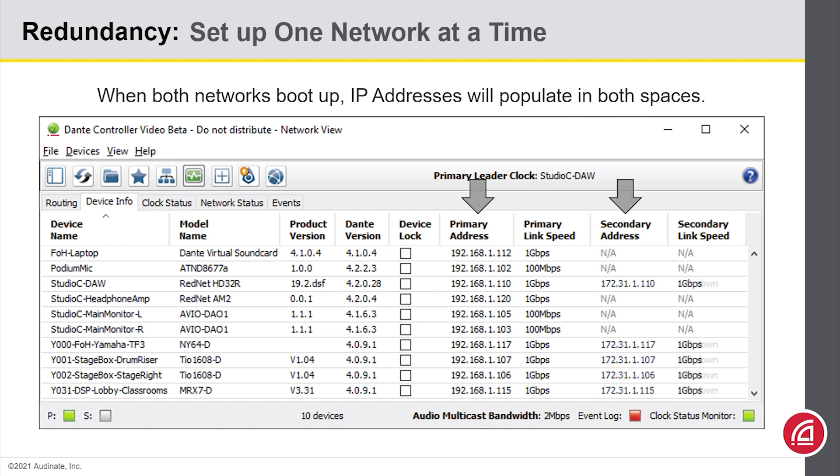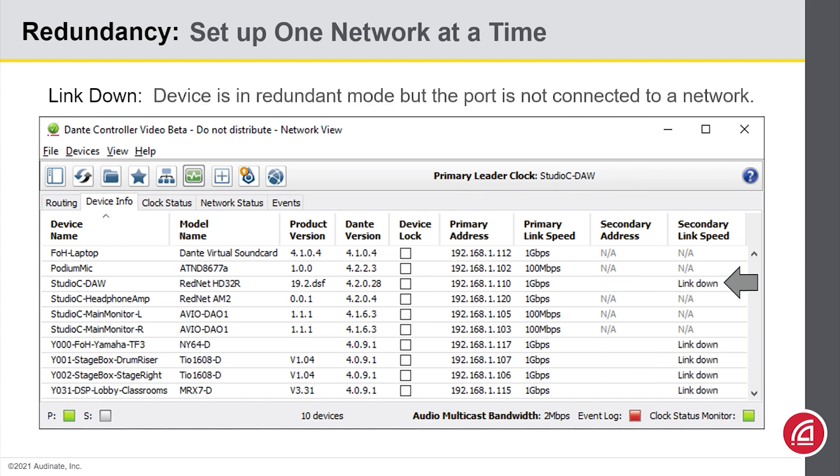But if I disconnect the cables to my secondary network or just simply turn off my secondary switches, we can see those devices will now show link down. When you see that, you know the device is properly set for redundant networks. If you see any devices that show NA, that means the device only has one Dante port. Either the device doesn't support redundant networks or the device is set in daisy chain mode.